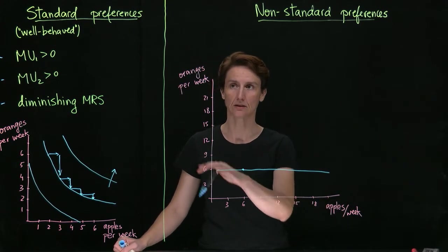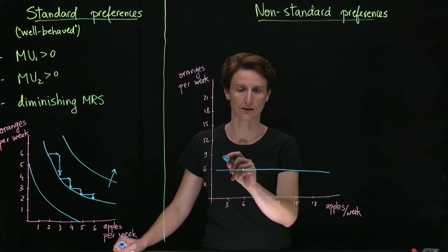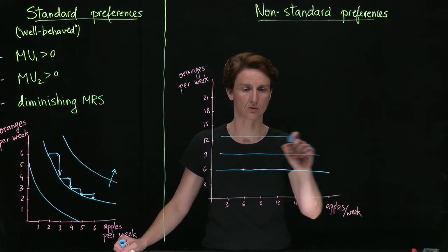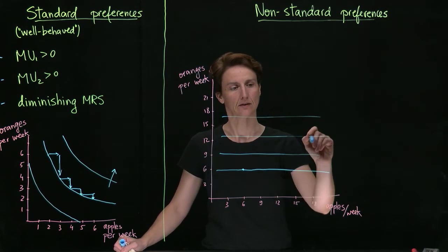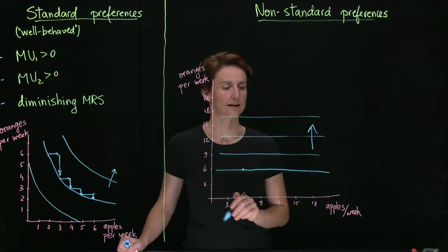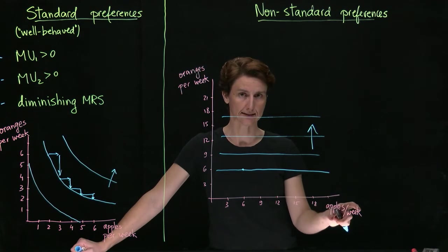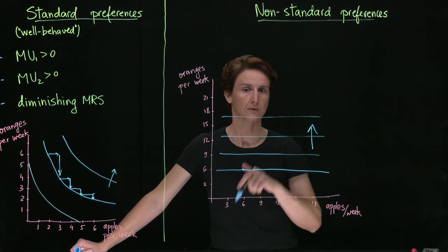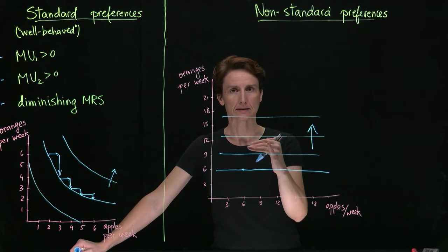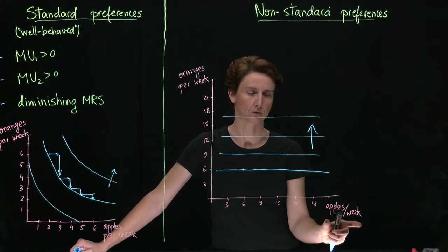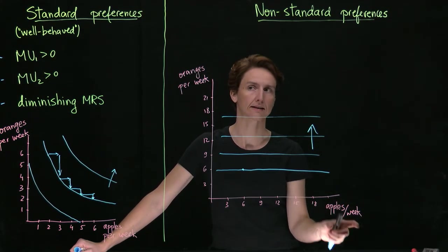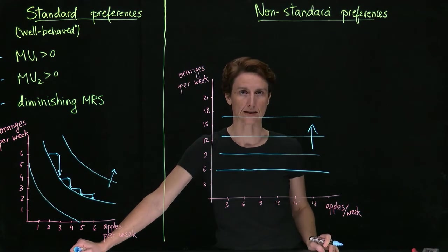We can't move up or down because we do like oranges and that will make us either happier or less so. So indifference curves if we have zero marginal utility from the good on the horizontal axis will be horizontal themselves. Remember, MRS is a measure of how much value we place on the good on the horizontal axis relative to the good on the vertical axis.